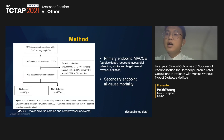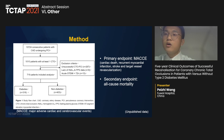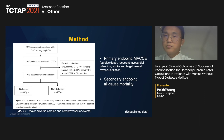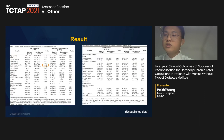Diabetes mellitus is associated with greater CAD burden including diffuse disease, multi-vessel disease, and heavy calcification, and is relatively common in CTO patients. DM may also have a detrimental effect on collateral circulation and microvascular function. However, the five-year impact of successful CTO recanalization comparing diabetic and non-diabetic populations remains unknown. The study enrolled 719 consecutive patients with successful CTO PCI, grouped into diabetic and non-diabetic patients. The primary endpoint was MACCE—comprising cardiac death, recurrent MI, stroke, and target vessel revascularization—and propensity score matching was performed to balance baseline characteristics.